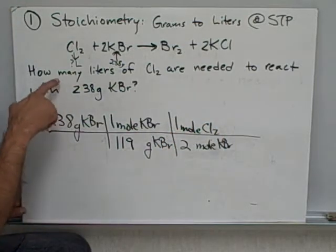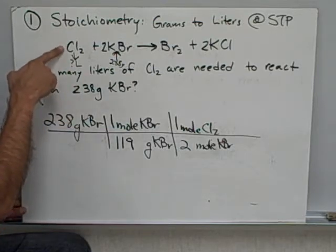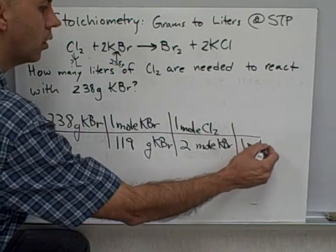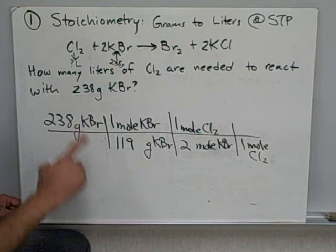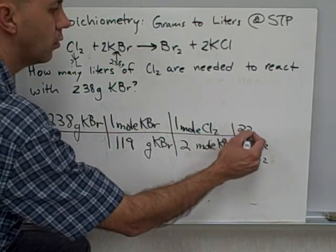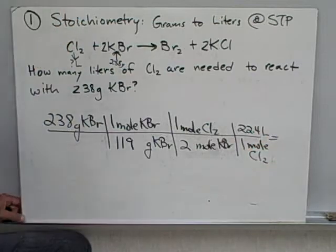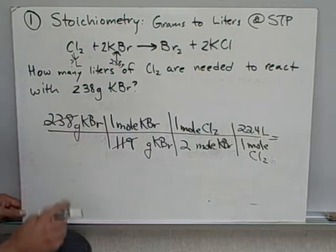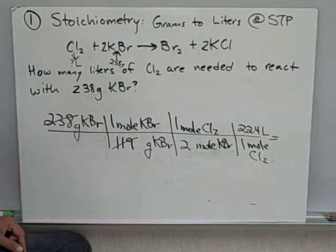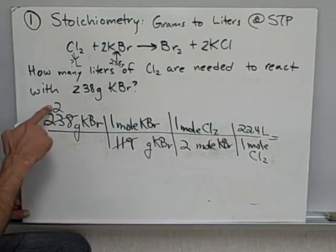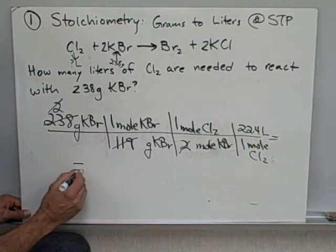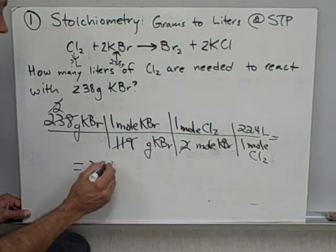Now my final step is to go from moles down to liters. One mole of Cl2 occupies 22.4 liters. All right, let's do the math. 119 goes perfectly into 238. This two and this two are going to cancel. Now my answer equals 22.4 liters.